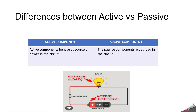Next, we are going to see the differences between active and passive components from the definition we saw earlier. In terms of role in the circuit, an active component will act as a source and a passive component will act as a load. For example, here in the circuit, the active component is a battery and the passive component is a bulb. The active component delivers the electric current and the passive component absorbs this electric current and glows. So the battery is an active component and the bulb is a passive component which is a load.